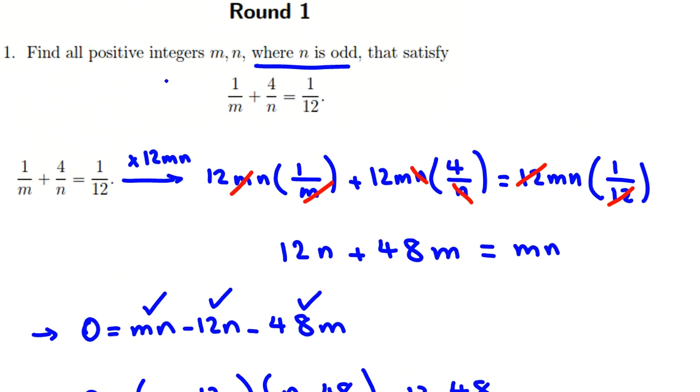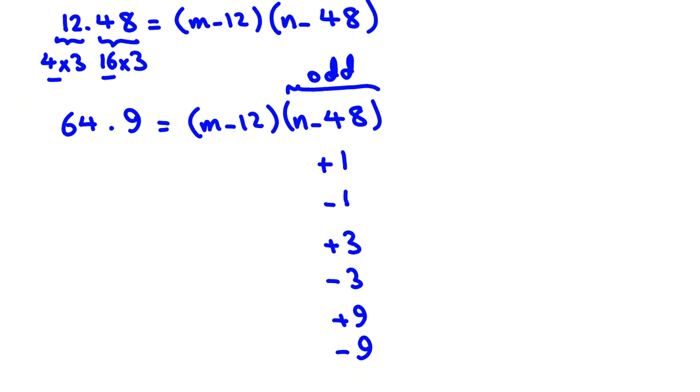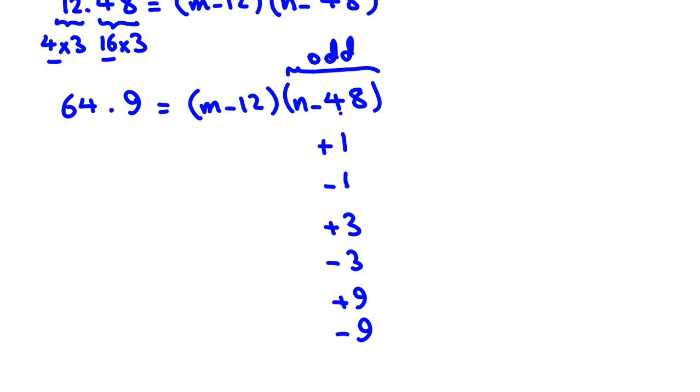Look, m and n are positive integers, but here it is not n, it is n minus 48. So maybe n is 1, for example, and 1 minus 48 is negative. So we should also check negative signs now.